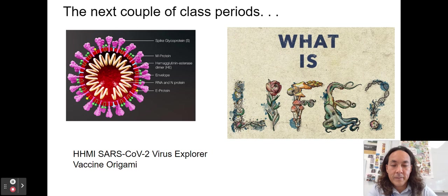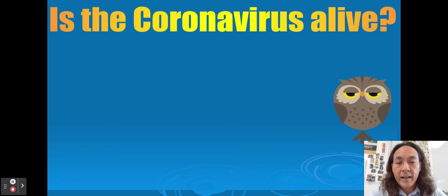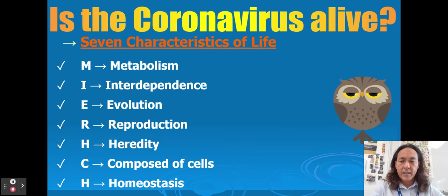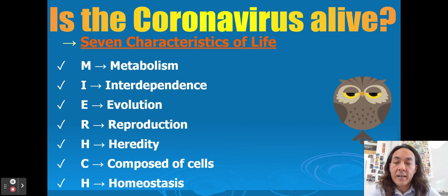We spent the next couple of class periods talking about what is life and the coronavirus. I felt called to talk about it as we work our way out of the pandemic. I'm not interested in you memorizing all the characteristics of life — I want you to construct an argument around them. The seven characteristics we use are: metabolism, interdependence, evolution, reproduction, heredity, composed of cells, and homeostasis.